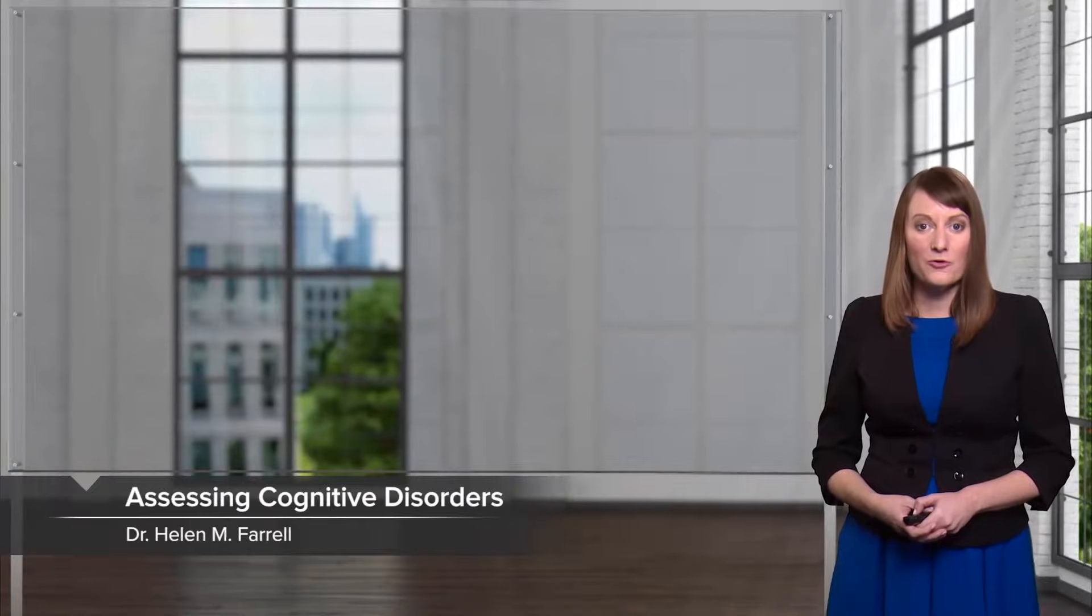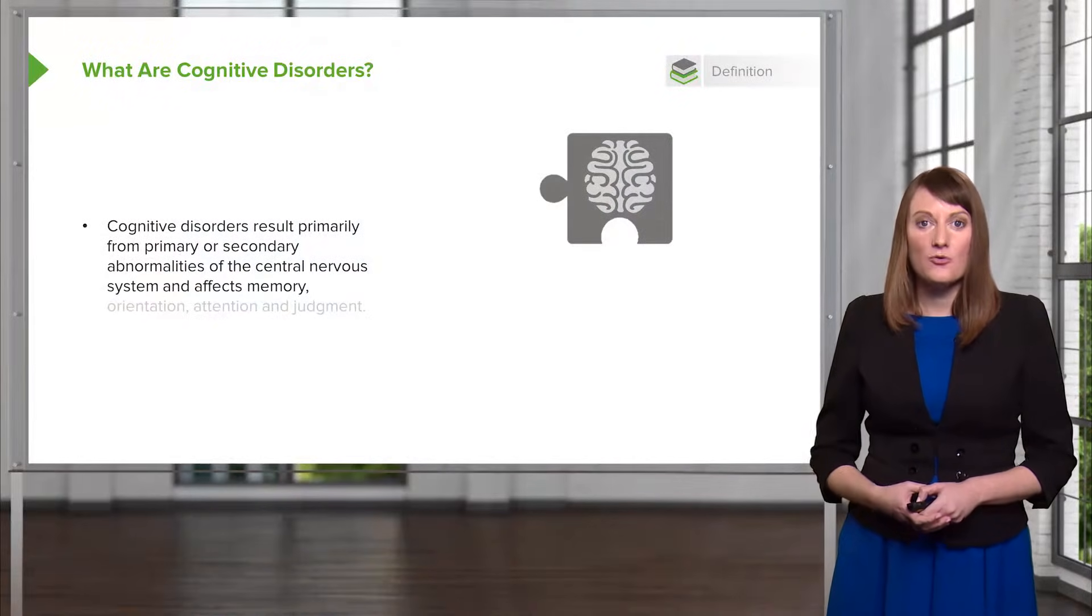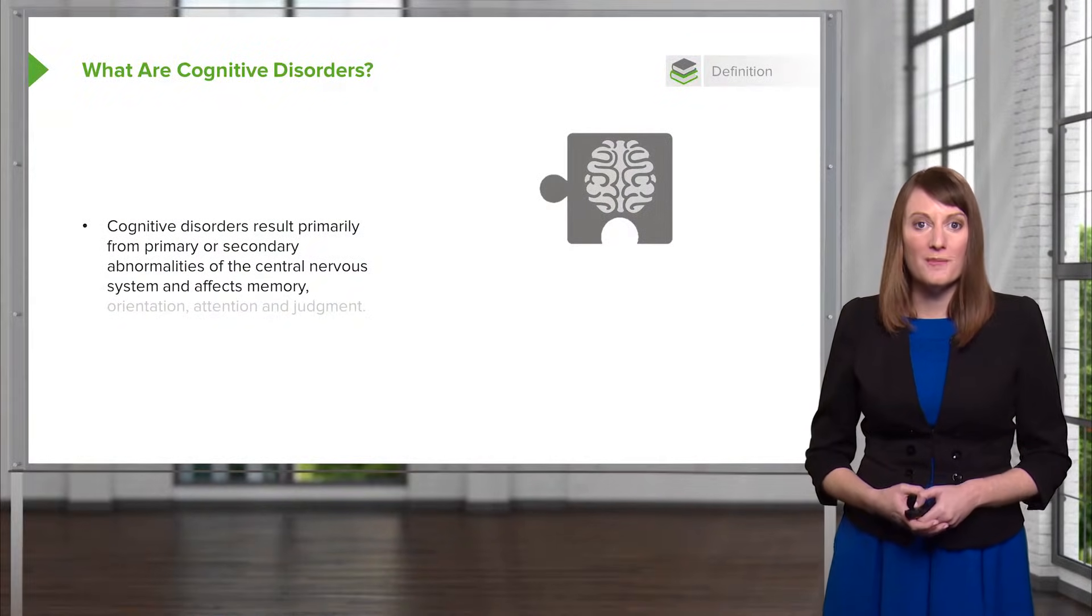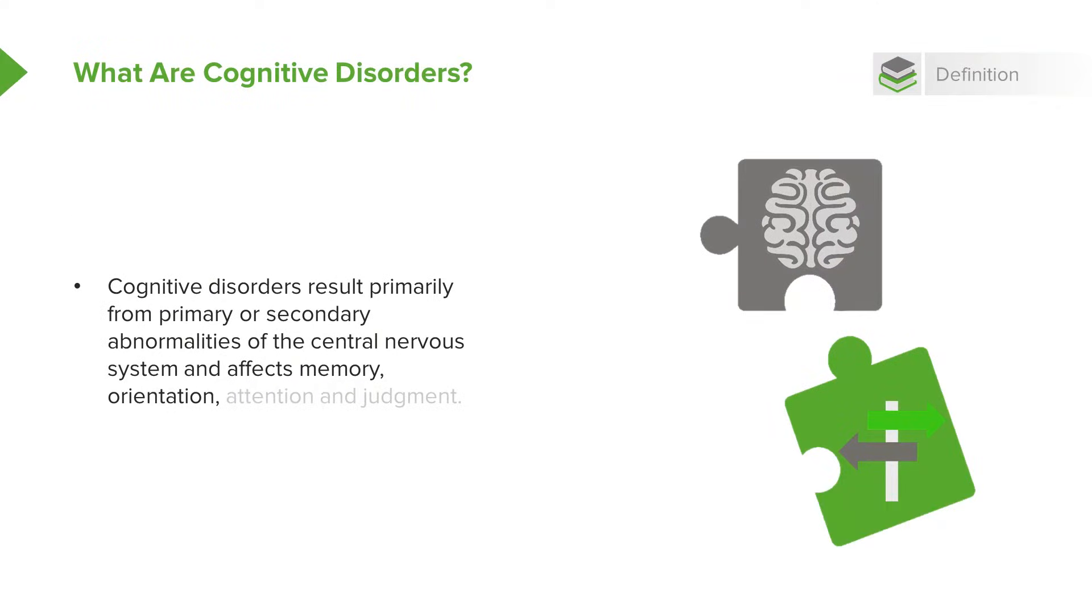I want to walk you now through a quick test for cognitive disorders. Cognitive disorders result primarily from primary or secondary abnormalities of the central nervous system. They can affect memory and orientation, attention, and judgment.